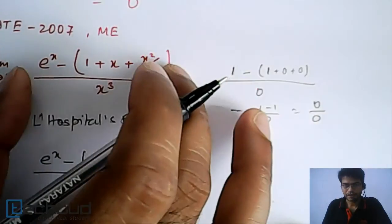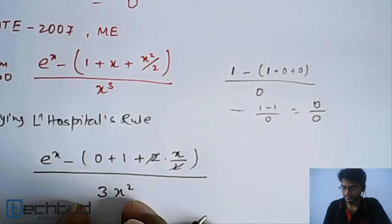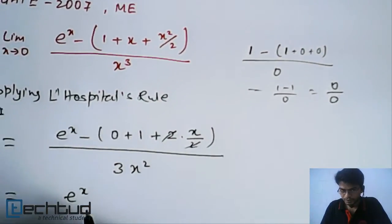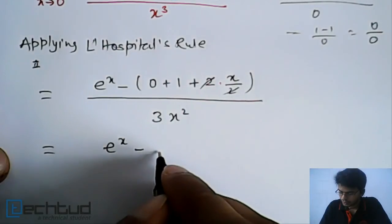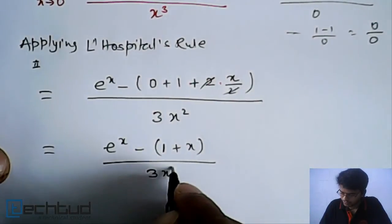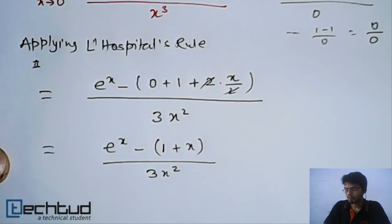We are differentiating numerator separately and denominator separately. Now if we solve this, it is equal to e to the power x minus 1 plus x upon 3x square.